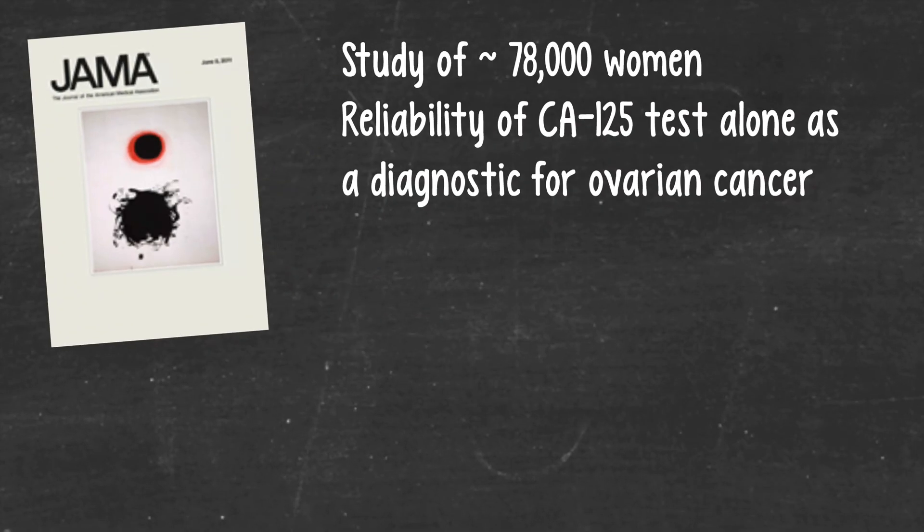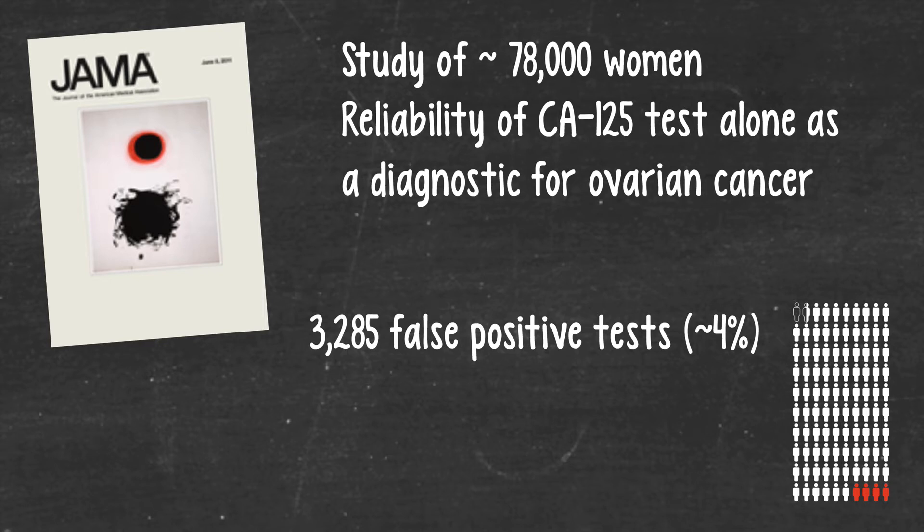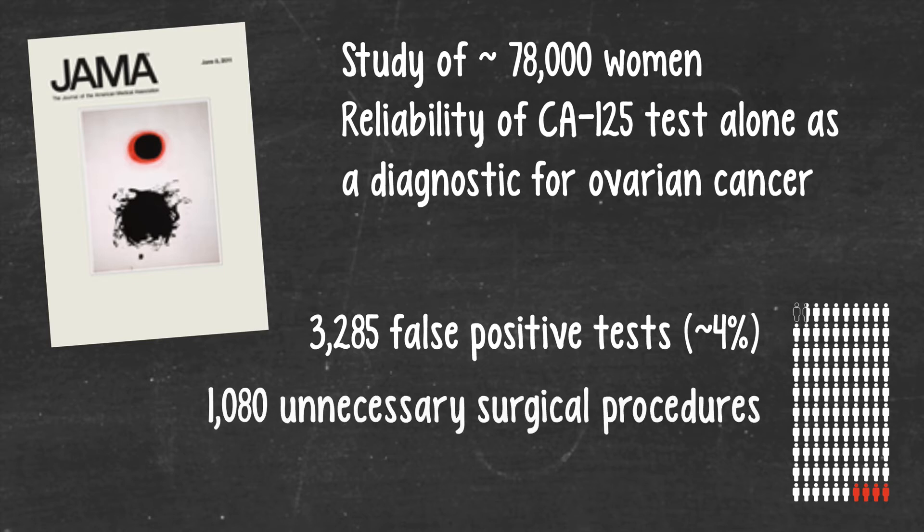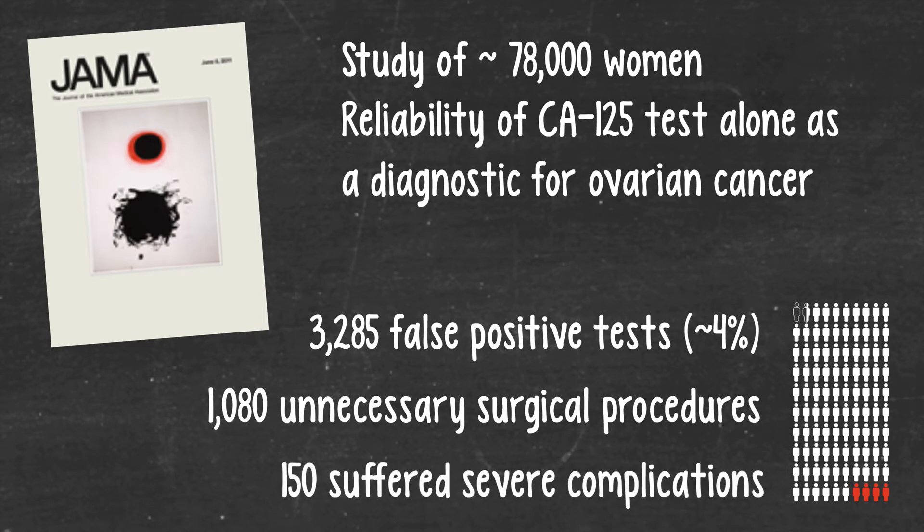In a study published in the Journal of the American Medical Association that followed 78,000 women who were tested for ovarian cancer using the CA125 test, the test yielded 3,285 false positive results, or about four percent. Of these 3,000 or so women who did not have the disease but still tested positive for it, 1,080 were subjected to unnecessary surgical procedures based upon those test results, of whom 150 suffered complications severe enough to require further hospitalization.